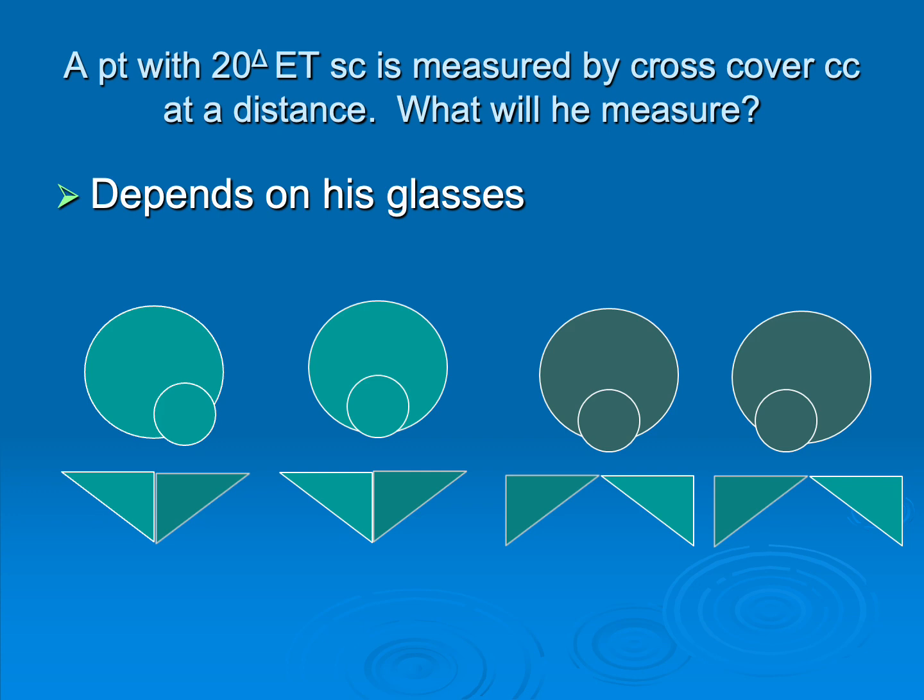But again, the way that we fix esotropia is with base out prism. But over here on the left, with that eye turning in, they're looking through base in prism. That's making their strabismus worse. So when I measure through minus lenses, I will always measure more than what they really are. How much more? It depends upon Prentice's rule. Dioptric value. So the higher power glasses give me more error in my measurement.